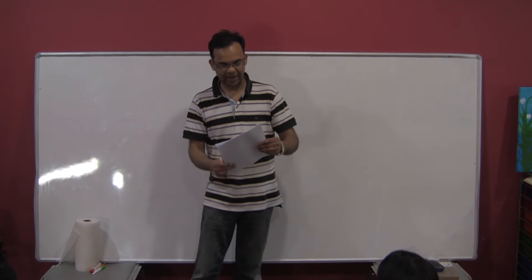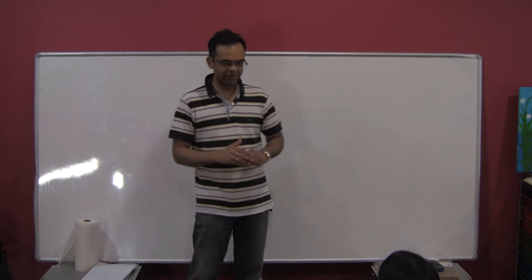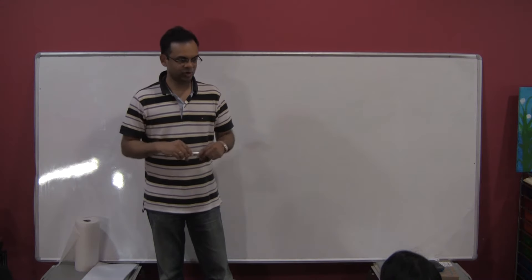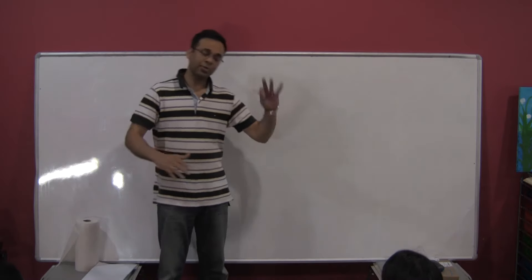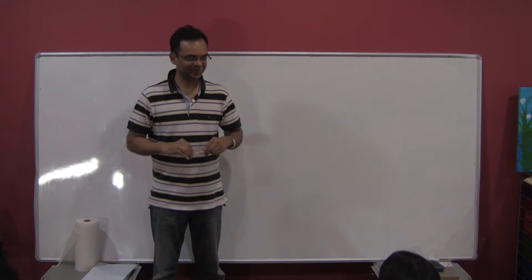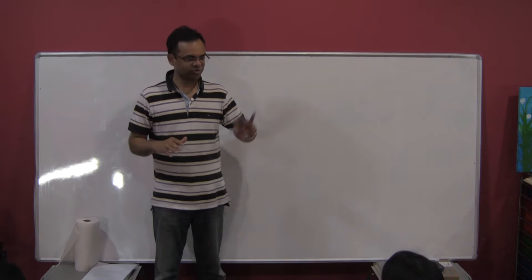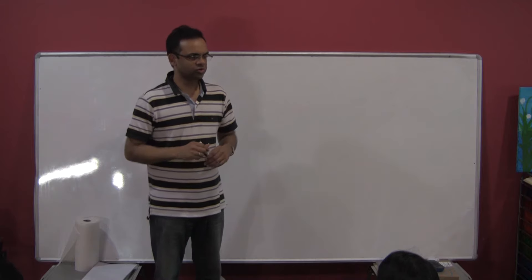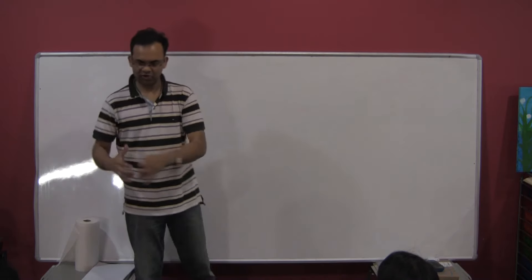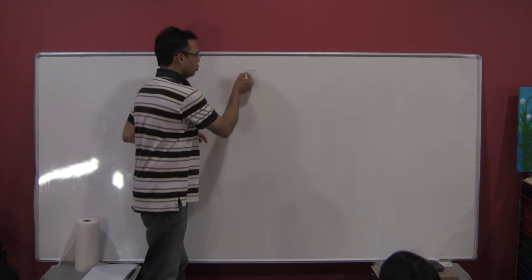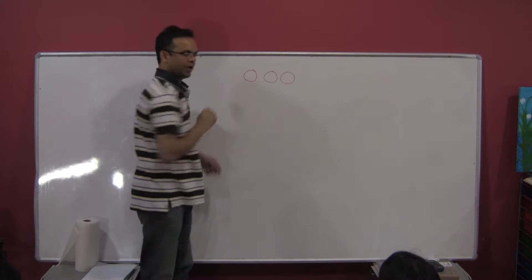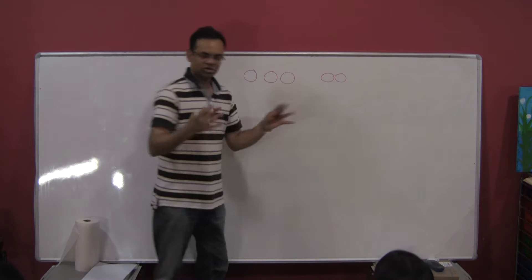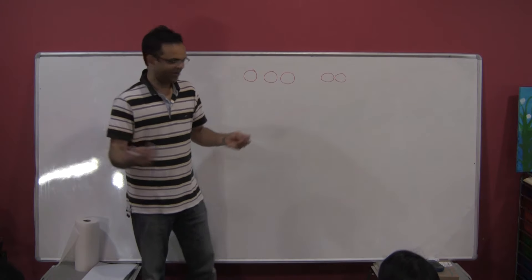One way to look at math is: we're really trying to model the real world on paper. Let's say, remember your preschool math class. If the teacher wanted to show you there are three apples in a basket — apple one, apple two, apple three — and in another basket there are two more apples. If you put both together, total how many apples are there? Five. It looks very easy now, but when you're in preschool, somebody had to teach you.